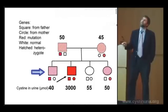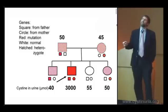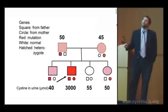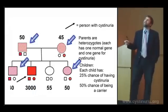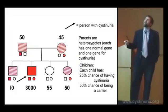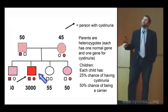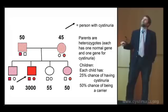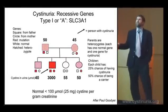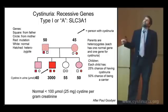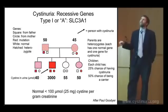Consider a father and a mother with four children — this is a statistical illustration. The heavy red arrow indicates a person with two abnormal genes, one from each parent. The hatched filling indicates heterozygotes — people with one abnormal gene. Twenty-five percent of the children will have a high amount of cystine in the urine. Twenty-five percent will have no abnormal genes, and fifty percent will be carriers but will not have abnormal amounts of cystine, just like their parents. Normal is less than 100 micromoles or 25 milligrams of cystine in the urine. So with this recessive gene, 25% of children will be affected by cystinuria with two abnormal genes and large amounts of cystine in the urine, while carrier parents will not have abnormal amounts.